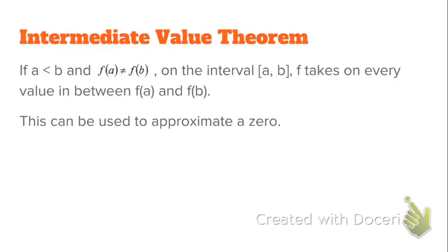Last thing: the Intermediate Value Theorem. All this says is — let's say you plug in one x value and get a negative number, like f of 1 is negative, and then f of 2 is positive. Then the Intermediate Value Theorem tells you that you're allowed to assume there is a zero at some point between 1 and 2. Because since polynomials are continuous, the graph has to cross zero at some point.